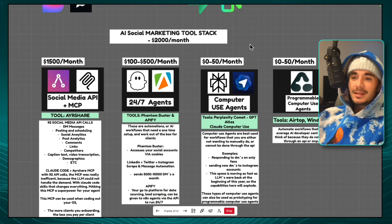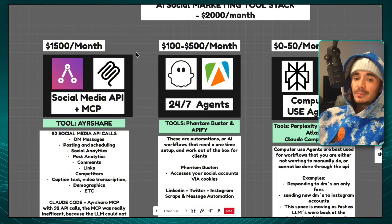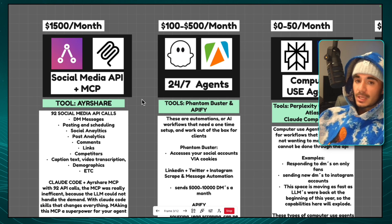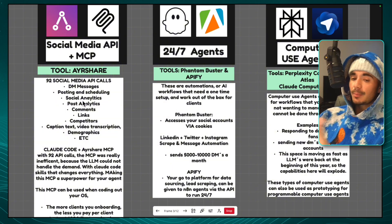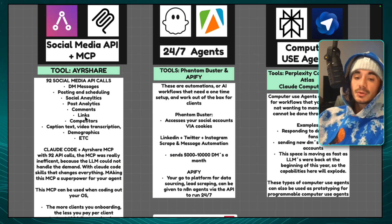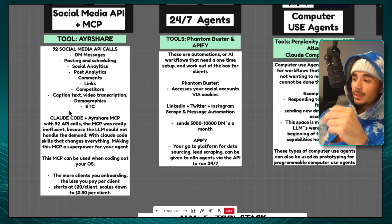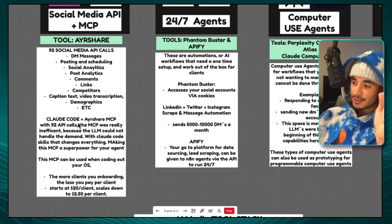Let's get into AI social media marketing and the tool stack associated. The first is the AirShare social media API and MCP. AirShare was just acquired for a ridiculous amount of money recently, and the new CEO has a lot of cool things coming. The reason we love AirShare is that with one tool we have access to 92 API calls — from sending DMs to posting content, looking at social analytics, post analytics, comments, creating custom links, competitor analysis, writing captions, video transcriptions, and demographics. Claude Code Skills changes how agents understand these docs, making social media agents far more powerful.